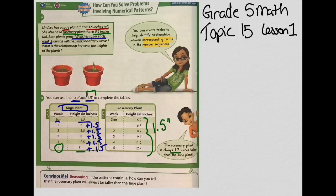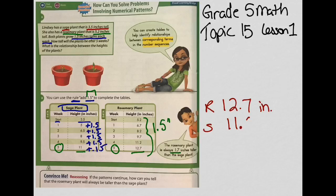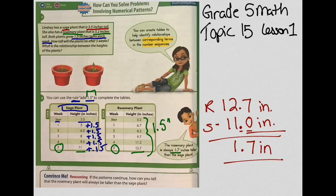At the end of week 5, the sage plant was 11 inches tall and the rosemary plant was 12 and 7 tenths inches tall. To compare the heights, we take rosemary at 12 and 7 tenths and subtract sage at 11 inches. Remember, if it's a whole number the decimal is to the right with zeros after it, so 11 inches does have a decimal. Subtracting: 7 minus 0 is 7, 2 minus 1 is 1, and 1 minus 1 is 0 — that's 1 and 7 tenths inches difference.